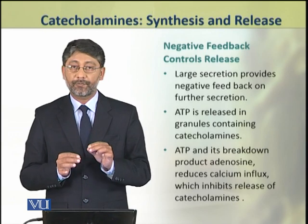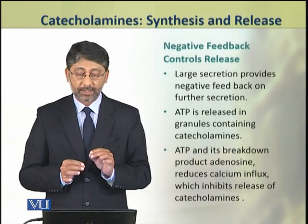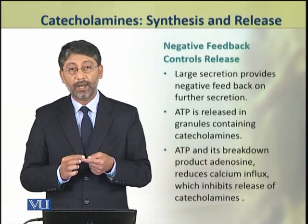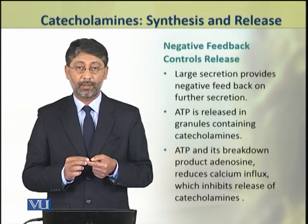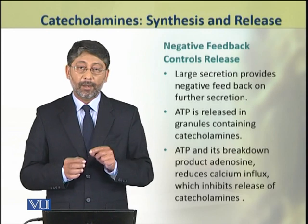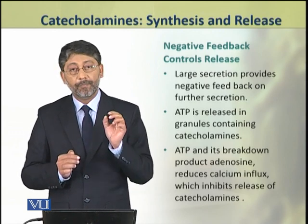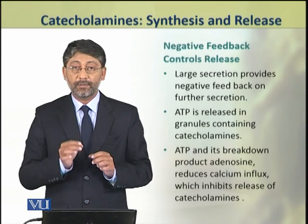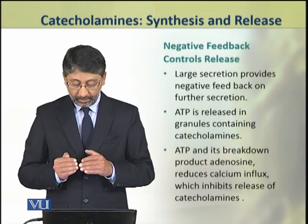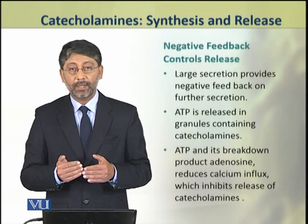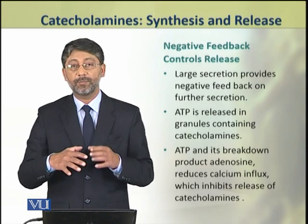However, when large secretions of catecholamines are produced, they cause negative feedback — a self-control mechanism. The vesicle from which catecholamine hormones are released also contains ATP. This ATP and its product of hydrolysis, adenosine, both have an inhibitory effect on the release of catecholamines because they decrease the conductance of calcium ions into the chromaffin cells. When calcium ion conductance into chromaffin cells decreases, exocytosis of secretory vesicles is reduced, and as a result, the release of catecholamine hormones also decreases.